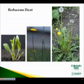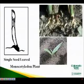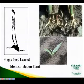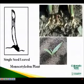Most dicot weeds are herbaceous, having little or no woody tissue, for example dandelion. Plants that have a single seed leaf are monocotyledons. Monocots have long, narrow leaves with parallel veins and fibrous root systems.